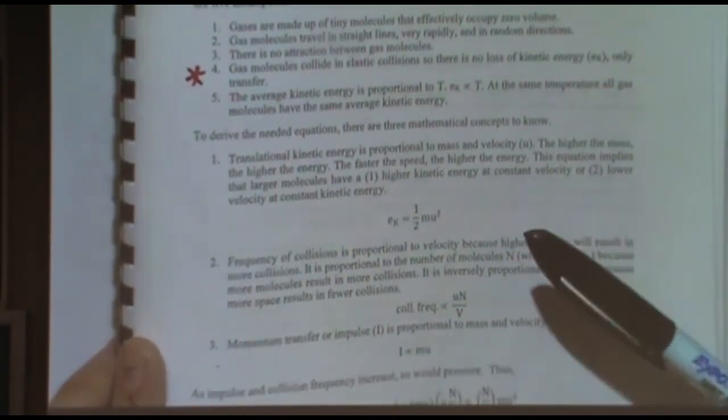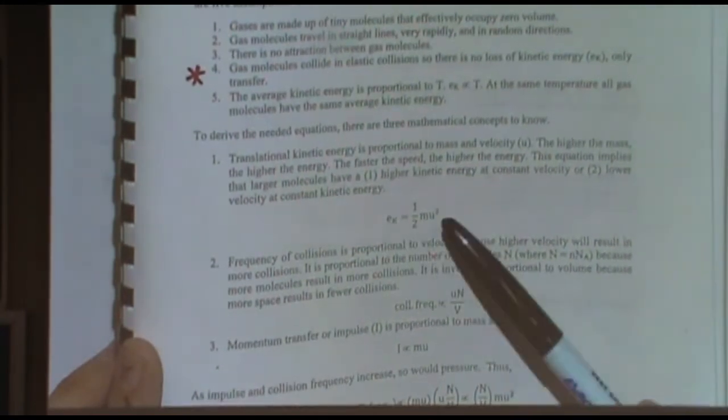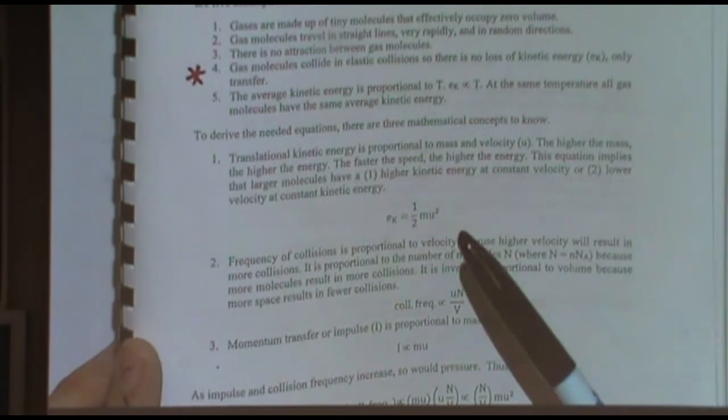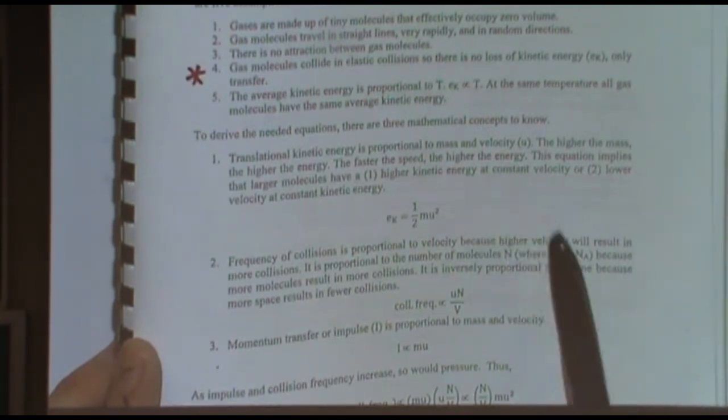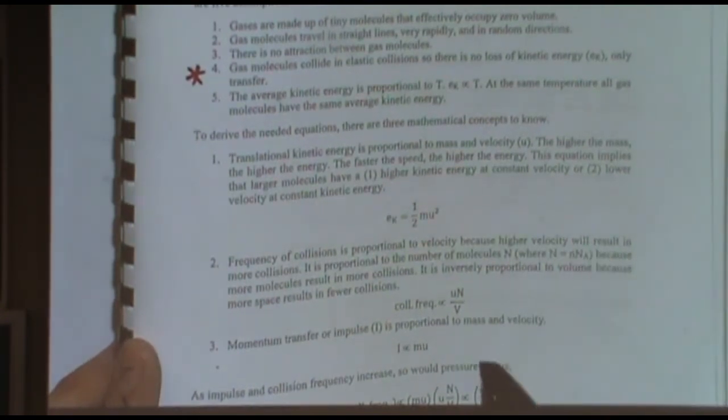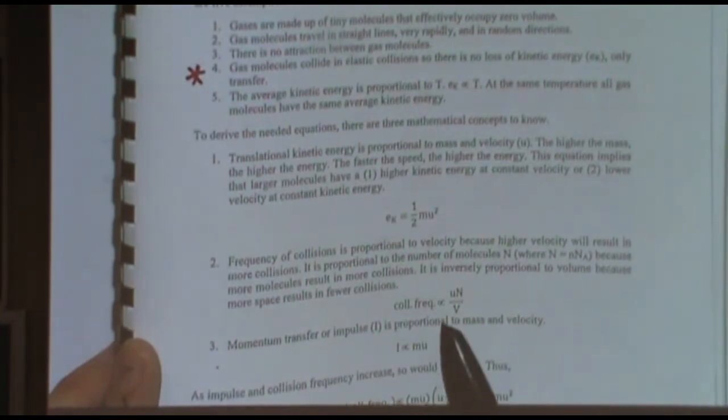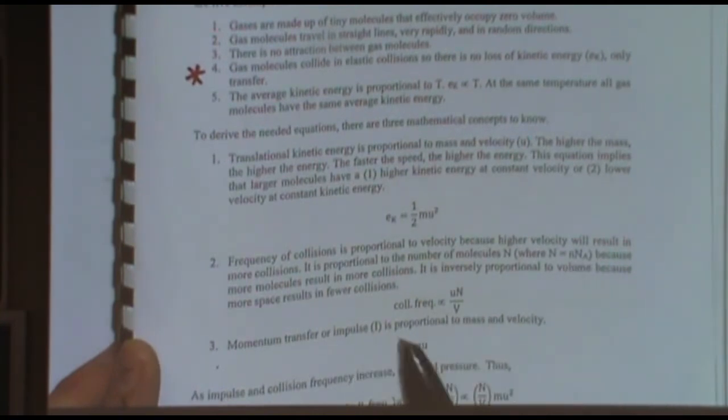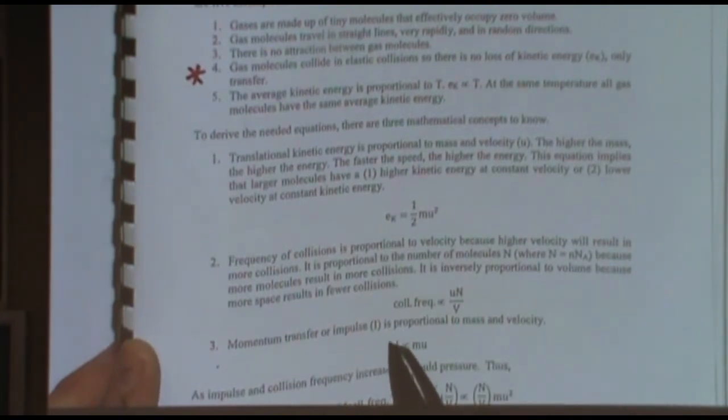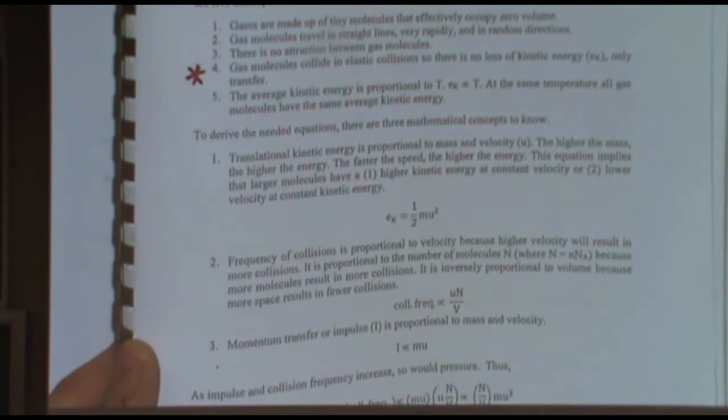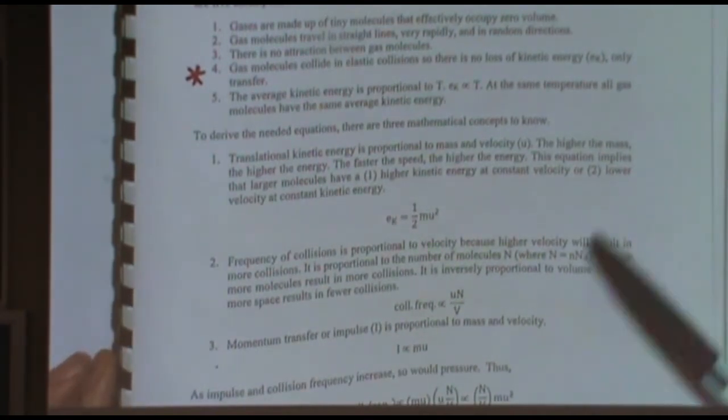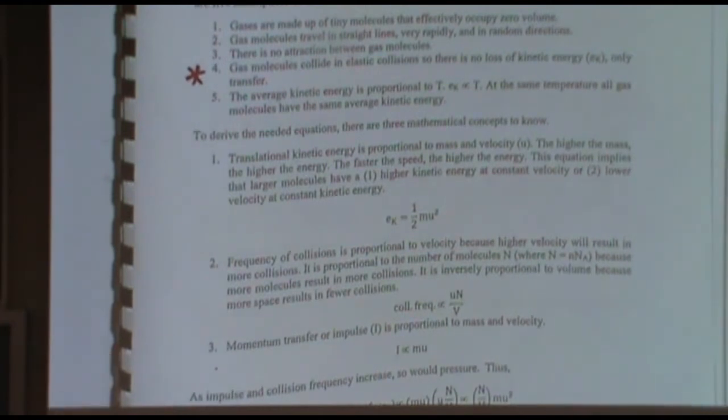The other things you might want to know are like the kinetic energy. There's two formulas for it. The one-half mv squared, and also the three-halves RT. The collision frequency, what I did is I just did velocity times the number of particles over the volume. And then momentum, usually it's written p. I wrote an i here as mass times velocity. That's kind of the main thing. The formulas here are really the kinetic energy is three-halves RT.